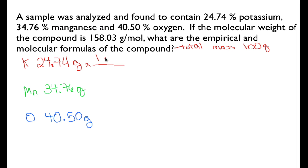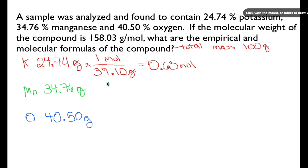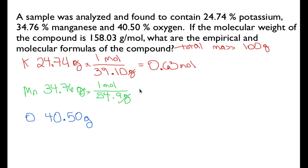We're going to convert our grams to moles. One mole of potassium has a molar mass of 39.10 grams. The grams cancel, and we find our sample contains 0.63 moles of potassium. We do the same thing for manganese — one mole of manganese has a molar mass of 54.9 grams. Grams cancel, and we have 0.63 moles of manganese.